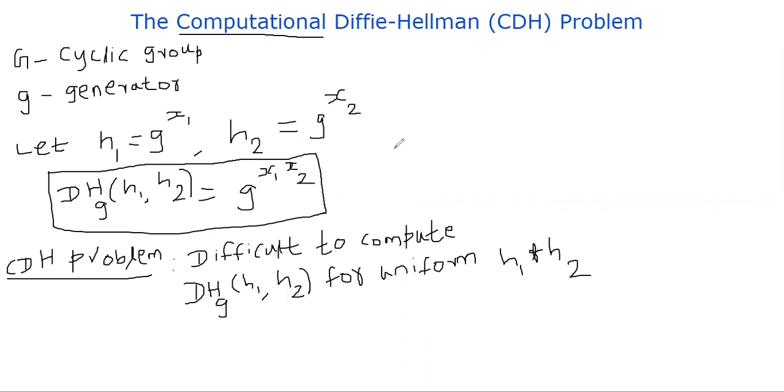So what is the CDH problem? The CDH problem is that if you randomly select two elements, h1 and h2 from G, it should be impossible to compute DH of h1, h2 in a reasonable amount of time. That's a very informal definition. So given h1 and h2, one should not be easily able to compute g power x1 x2. That is the computational Diffie-Hellman problem.